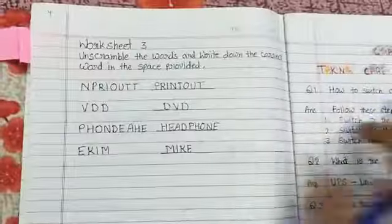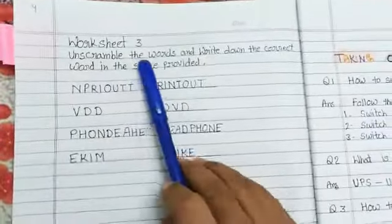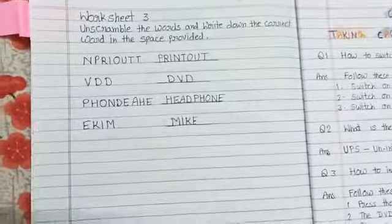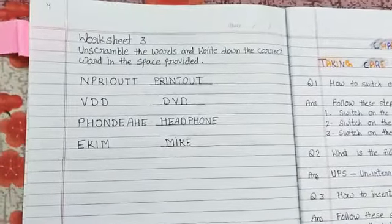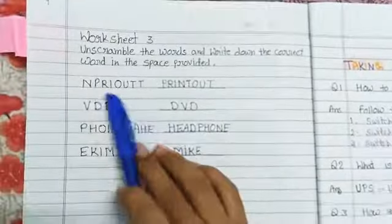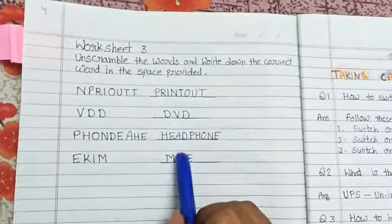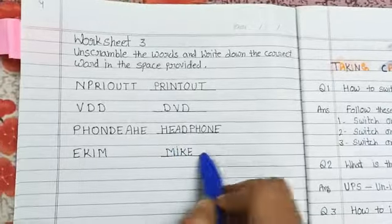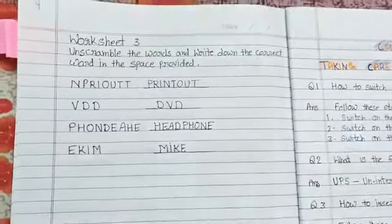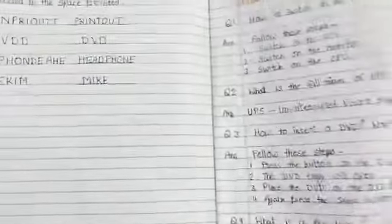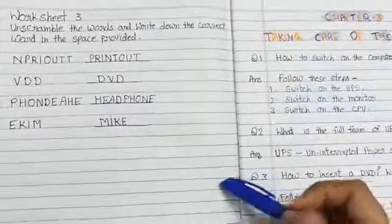You have to make them: printout, DVD, headphone, and mic. Now chapter three and four question answers - we have to do all these four chapters' questions, copy them, and learn.